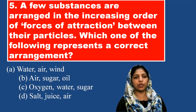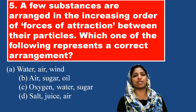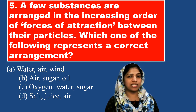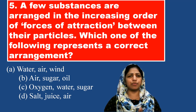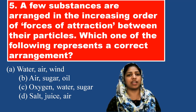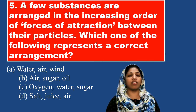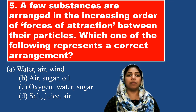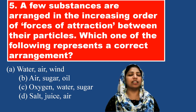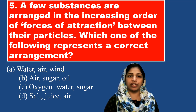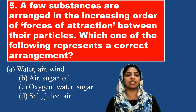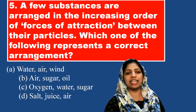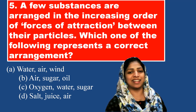If we get option D, we get salt as a solid state first, which means force of attraction starts high — this sequence is wrong. The correct sequence is Option C, with increasing force of attraction: oxygen, water, sugar. The answer is Option C.